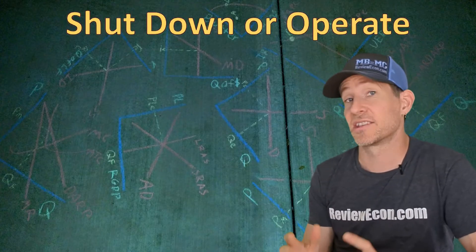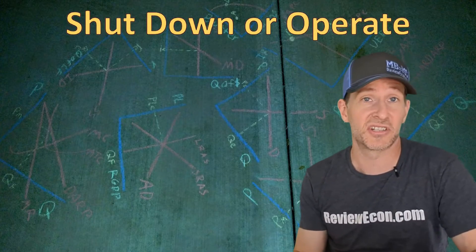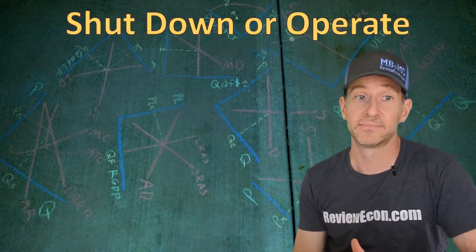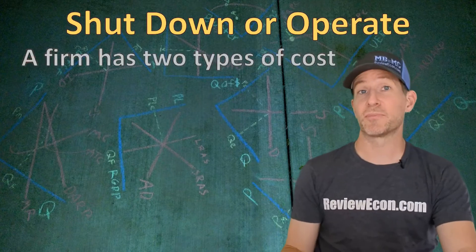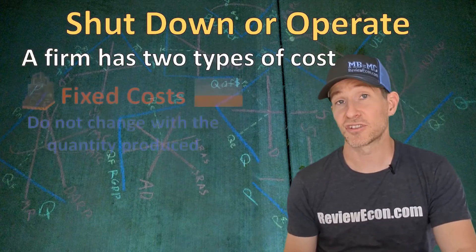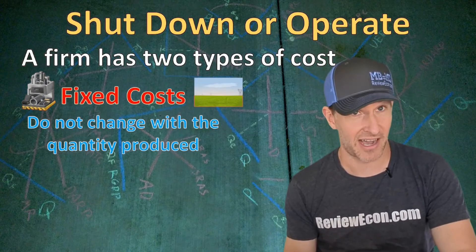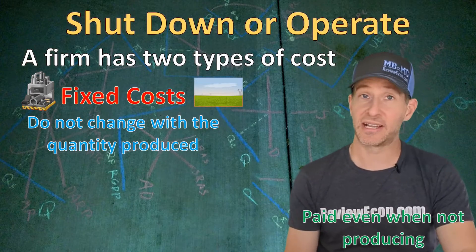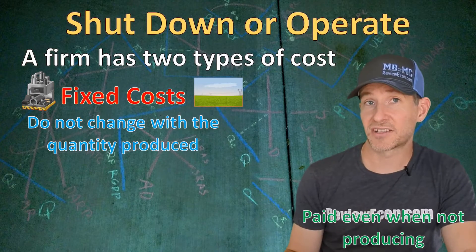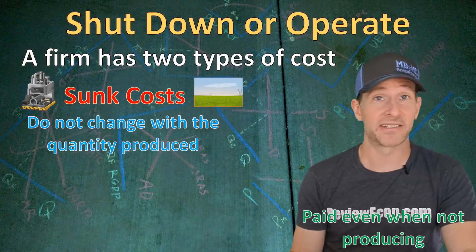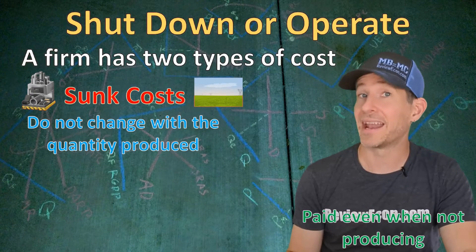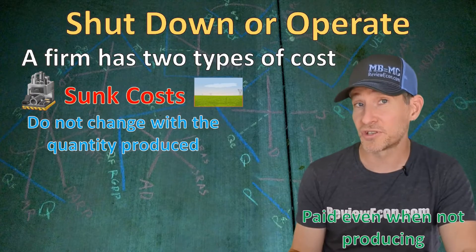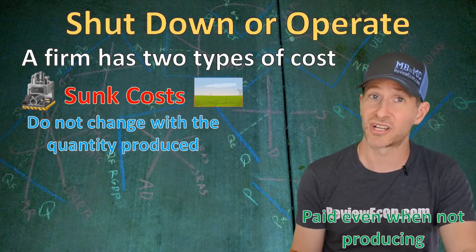The first decision we're going to talk about is whether a firm is going to shut down or operate in the short run. In regards to that decision, we need to remember two different types of costs. The first type is fixed costs. Fixed costs still have to be paid even if the producer isn't producing any output. Fixed costs are also called sunk costs because they are sunk, done, and over with and have nothing to do with the decision as to whether or not this firm produces or shuts down in the short run.